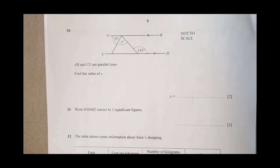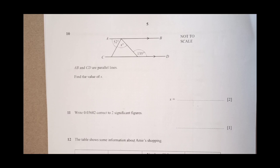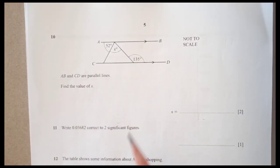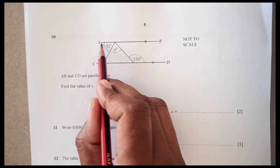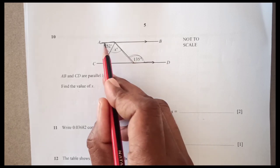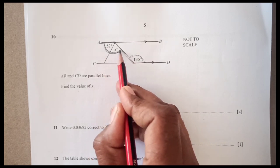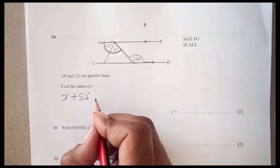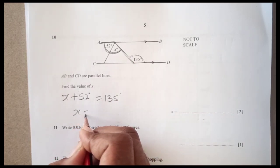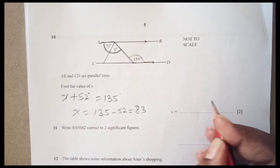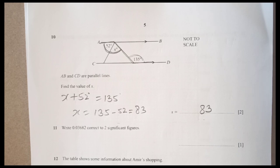Number 10, we have here. You can see we have a diagram. You can see CD here. AB and CD are parallel lines. Find the value of x. When this and this is parallel, mainly we can see there is this easy shape here. This angle and this total angle is going to be equal. Meaning x plus 52, these are like alternate angles is going to be 135. x is 135 minus 52, which is 83. Final answer is 83.